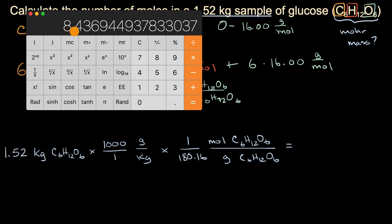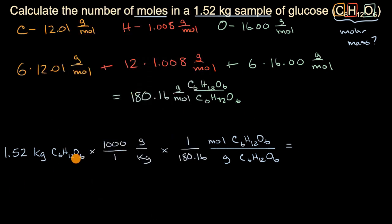So it will be 8.44 moles of glucose. So our kilograms cancel with our kilograms, and then our grams of glucose cancel with our grams of glucose. And we are left with 8.44 moles of glucose, moles of C6H12O6. And we are done.